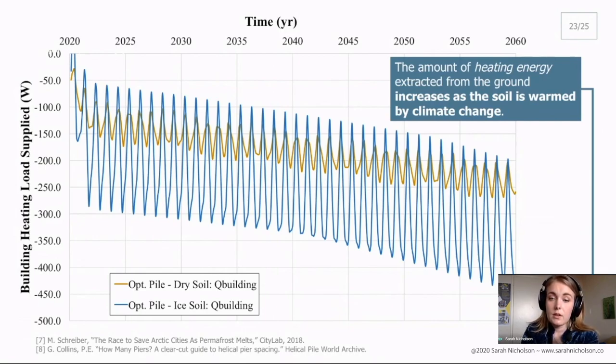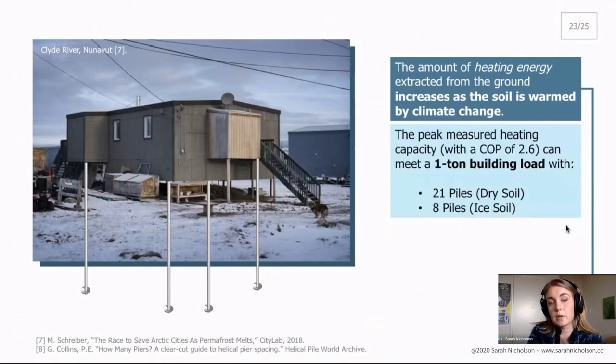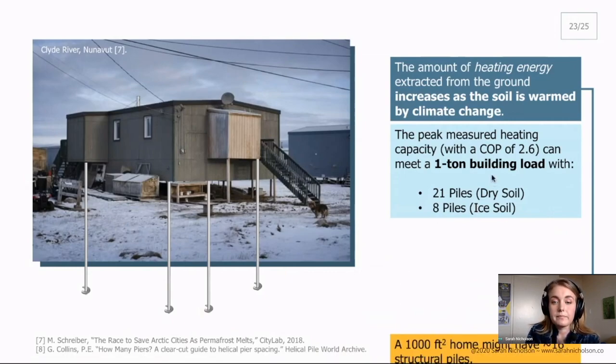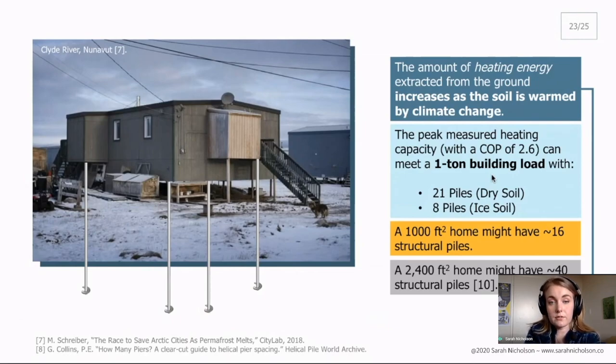Using a peak value from this curve, we can predict the approximate number of piles that might be needed by a building. So assuming that a building requires a 1 ton peak heating load, which is approximately a medium-small size building heating load, it would require 21 piles in dry soil and 8 piles in ice soil to meet that peak load. If we were to take an approximate spacing of 8 feet for these structural piles, a 1,000 square foot home might have 16 structural piles. And a slightly larger home might have 40 structural piles. So these 21 and 8 piles are certainly within reasonable values for this application.